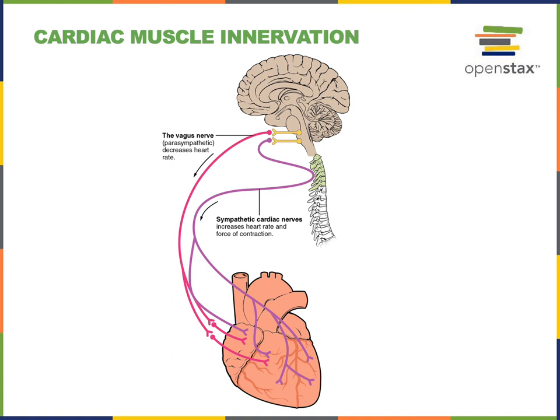Although the SA node of the heart functions as the pacemaker, generating the action potentials that stimulate contraction independent from input of the nervous system, the nervous system can increase or decrease the heart rate. In particular, it's the autonomic efferent fibers that regulate the heart. Parasympathetic efferent fibers release acetylcholine in the SA node and AV node, leading to a decreased heart rate. Sympathetic efferent fibers release norepinephrine throughout the heart, leading to increased heart rate as well as increased force of contraction.